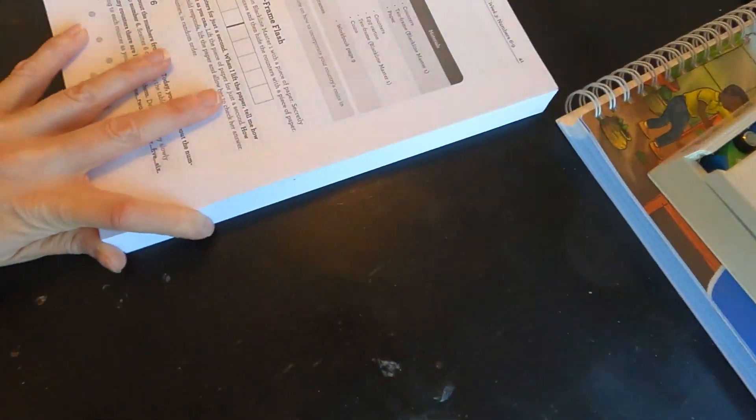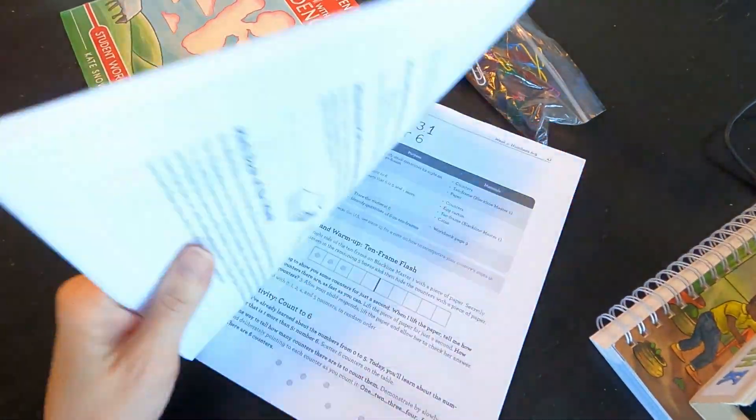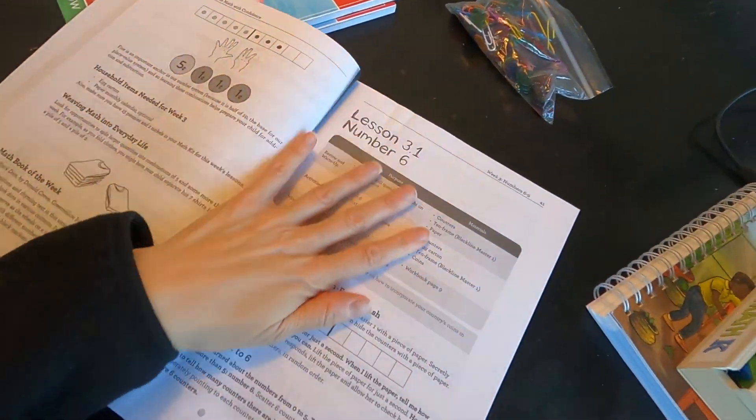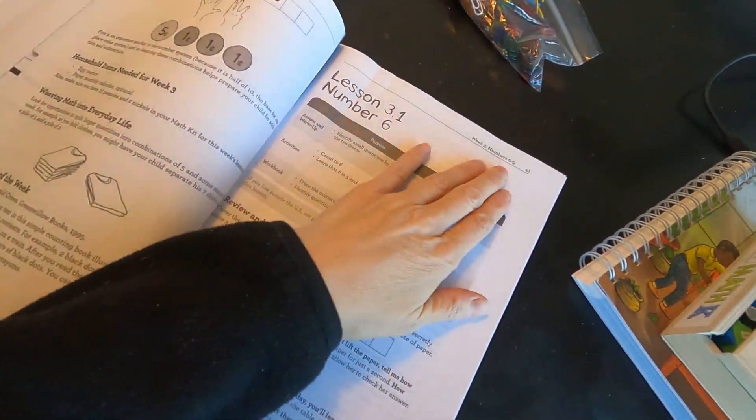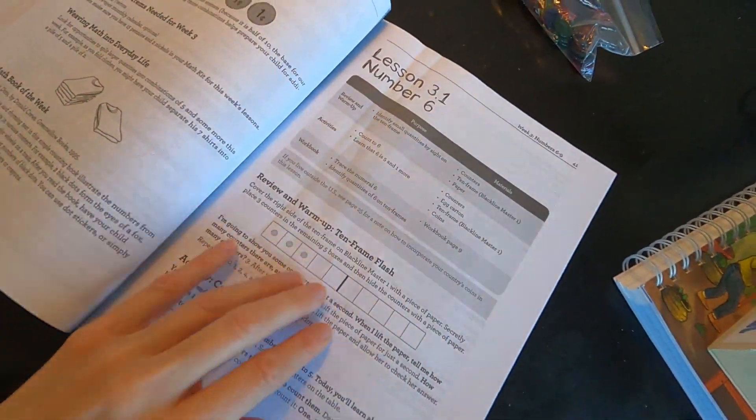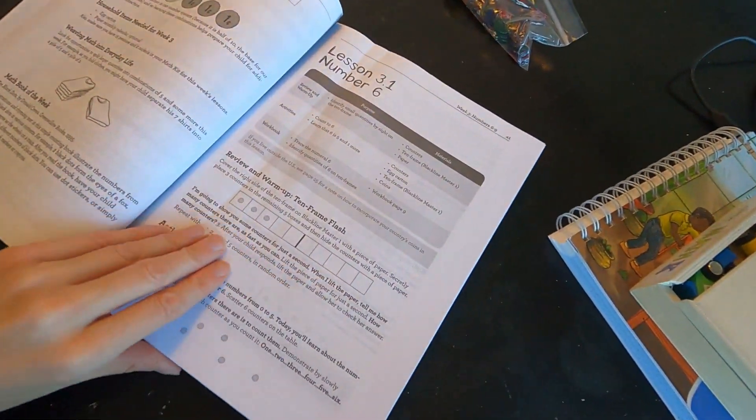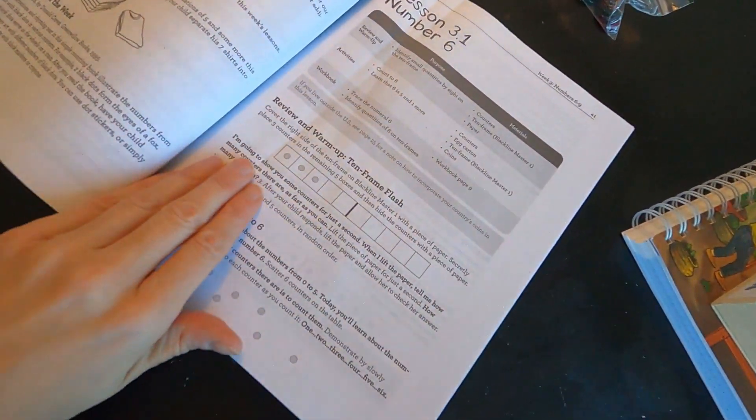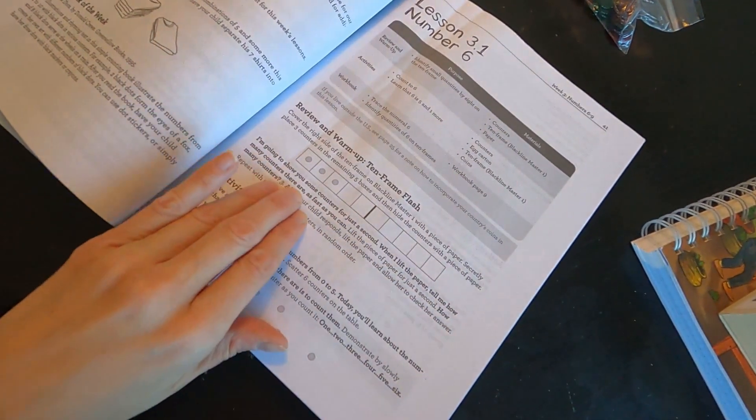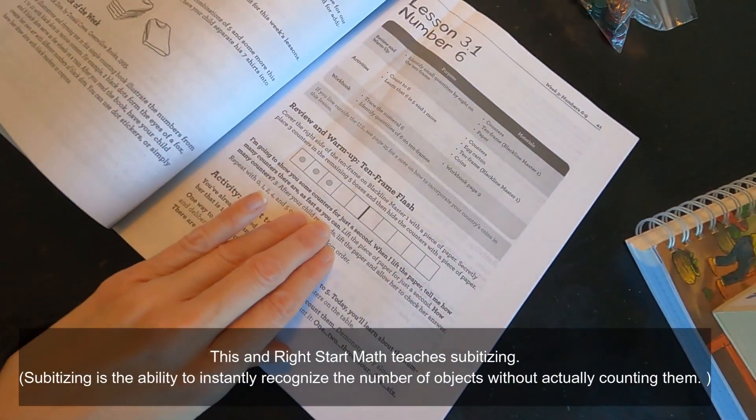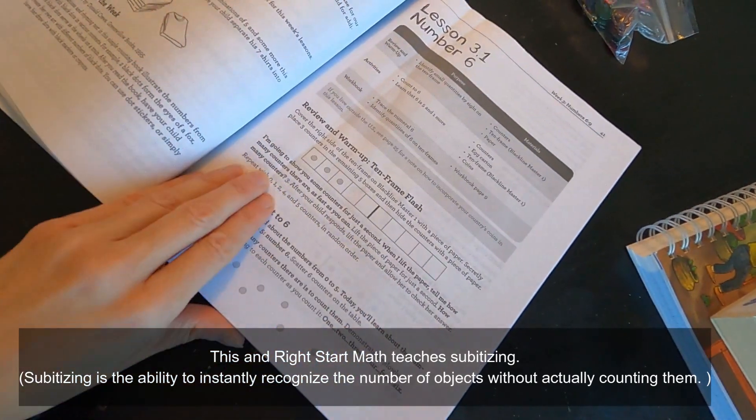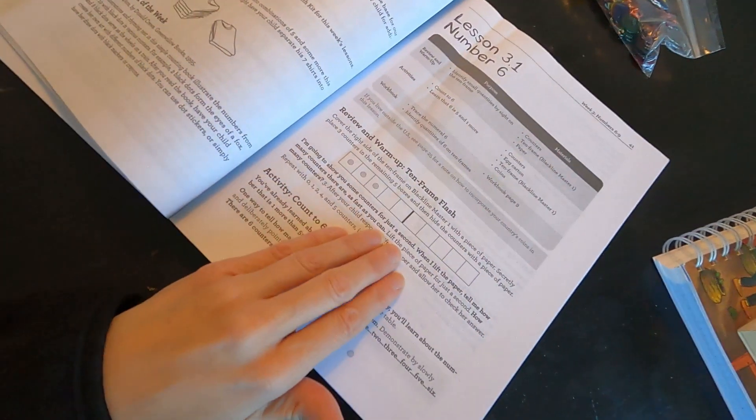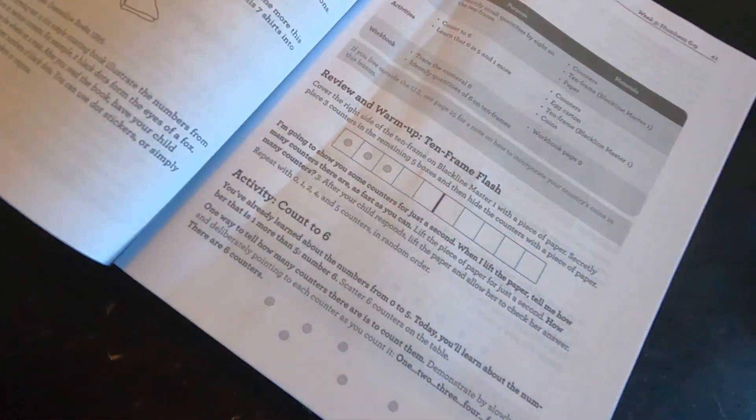Okay, so this is the teacher's manual for Math with Confidence. We are learning number six is the focus today. So every day in kindergarten one is a different... this is week three, number six through nine. So today we're gonna take the 10 frame out - it comes in the book. Put the 10 frame down and then we're gonna put some counters. And it says we're gonna cover the counters with a paper. It says I'm gonna show you some counters for a second. When I lift the paper, tell me how many counters there are as fast as you can. Lift the paper just for a second and see how many counters - three. So then repeat it with zero, one, two, three, four, and five in random order. So this is teaching subitization, which is helping them to count very efficiently large quantities of numbers.